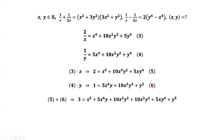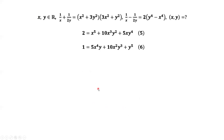Equation 5 plus equation 6. The left-hand side equals 2 plus 1, which is 3. Looking at the right-hand side, this is X plus Y to the power of 5, as verified by the binomial theorem. So 3 equals X plus Y to the power of 5. Taking fifth roots on both sides, we have X plus Y equals the fifth root of 3.